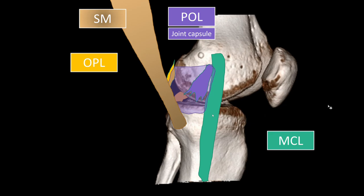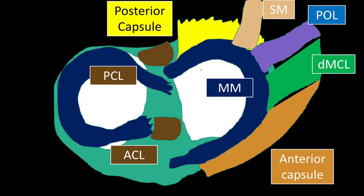As a quick recap: the posteromedial corner has the MCL with its different layers, the posterior oblique ligament, joint capsule, semimembranosus, and OPI. Go check that out in the other video. We are now focusing on the anterior components — the anteromedial parts. From a view from above, this is anterior, this is posterior, so the posteromedial corner sits back here and we are now looking at the anteromedial corner.